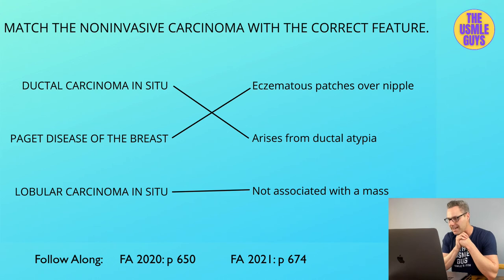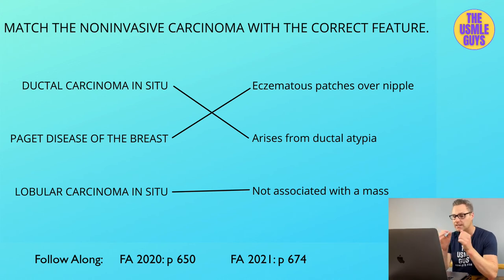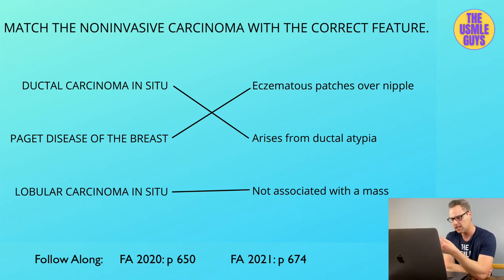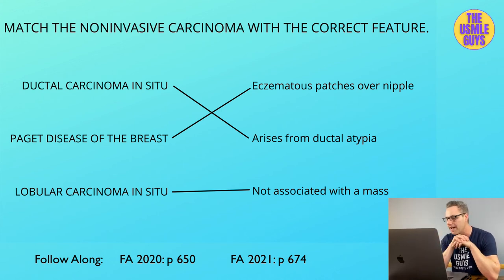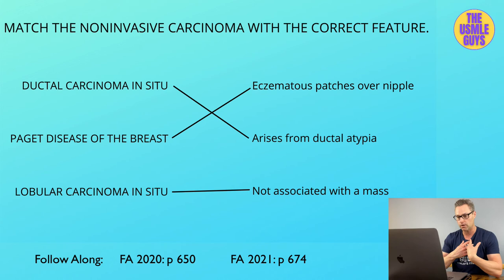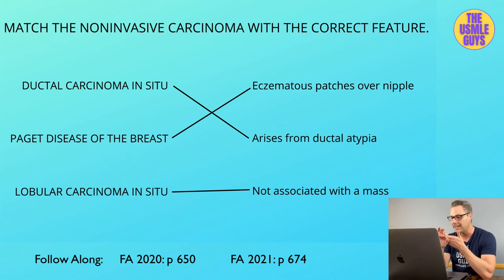A subtype of DCIS known as comedocarcinoma is characterized by cells with high-grade nuclei with extensive central necrosis and dystrophic calcification. Paget disease presents with scaly, raw, vesicular, or ulcerated lesions that begin on the nipple and spread to the areola, with possible bloody discharge. It is often unilateral, and patients also complain of pain, burning, and itching.